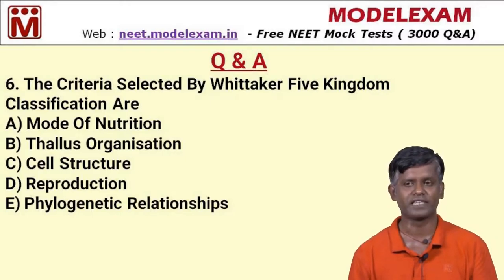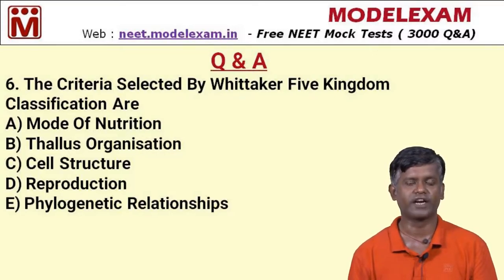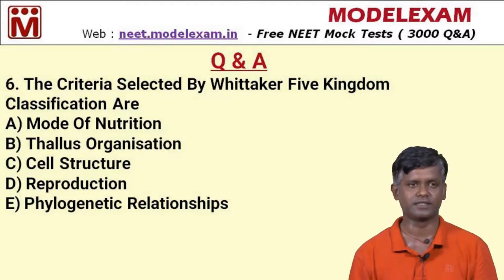Question number six: the criteria selected by Whittaker's five kingdom classification are — option A: mode of nutrition, option B: thallus organization, option C: cell structure, option D: reproduction, option E: phylogenetic relationship. Whittaker's five kingdom classification includes all of these characteristics, so the correct answer is all of the above.